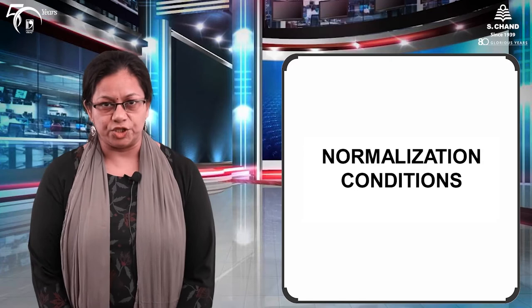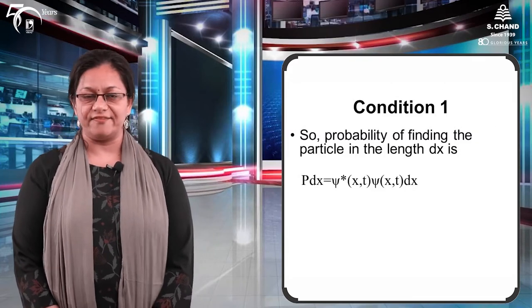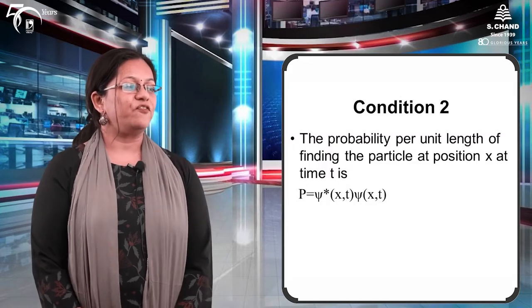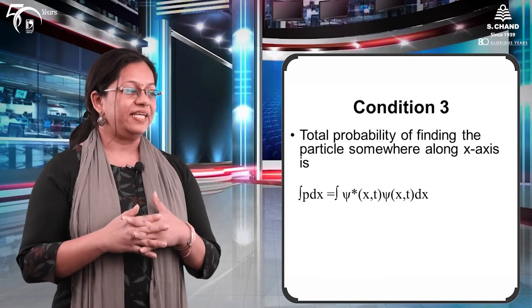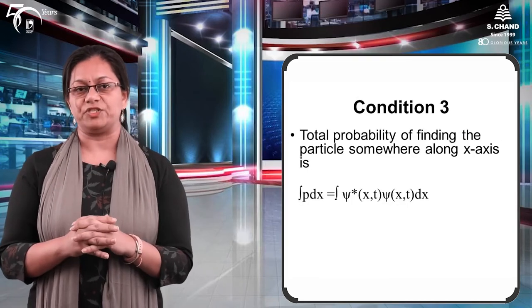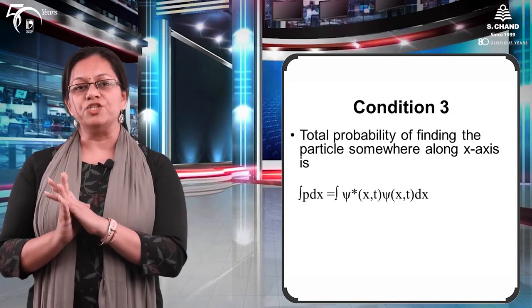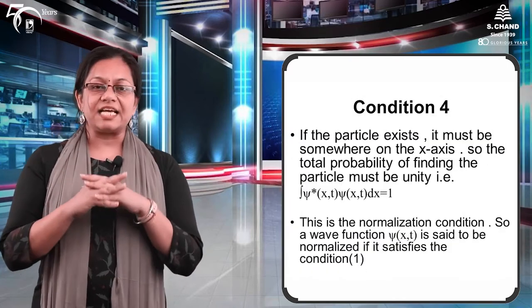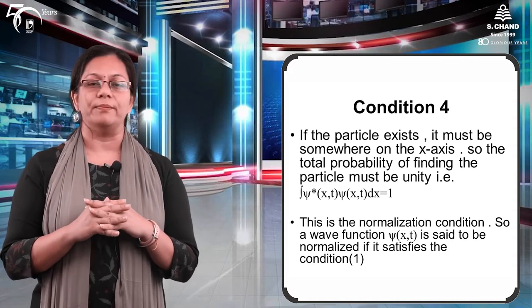Moving on to the normalization condition — the integral of chi(x,t) into chi-star(x,t) dx, integrated from 0 to infinity, should be equal to 1. Probability per unit length is the product of chi and chi-star. The total probability is the integral of P(x,t) = ∫χ(x,t)·χ*(x,t) dx. When this integral equals unity (1), that is called the normalization condition.